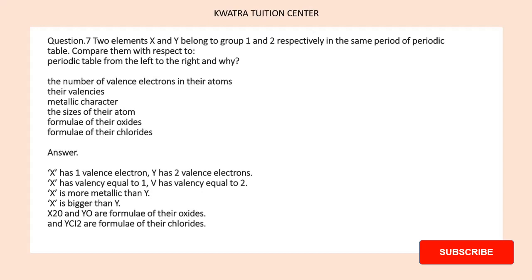Two elements X and Y belong to group 1 and 2 respectively in the same period of the periodic table. Compare them with respect to the periodic table from left to right. So we have X in group 1 and Y in group 2, and they are saying that on the basis of the number of valence electrons...